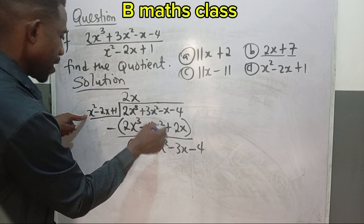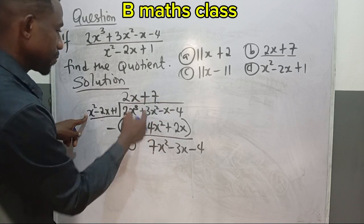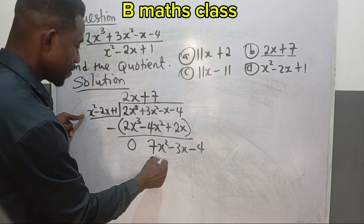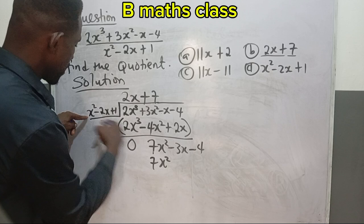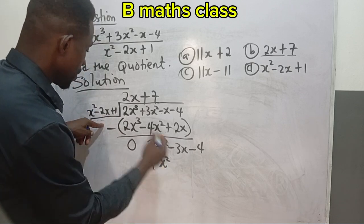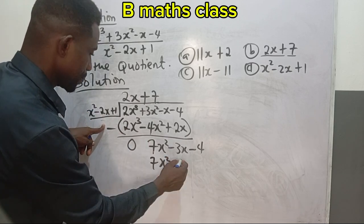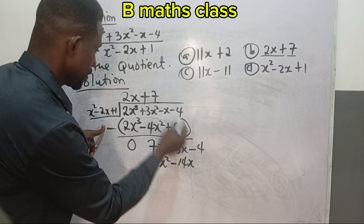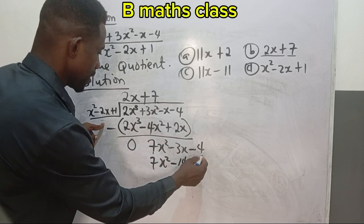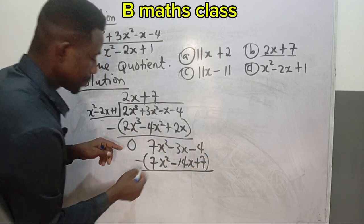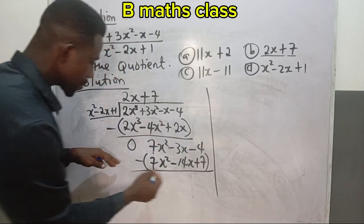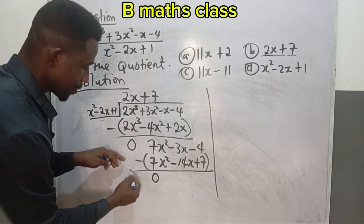The next is divide this 7x² by x², we have +7. 7 times x² is 7x², 7 times -2x we have -14x, 7 times 1 plus 7. We also have minus sign here, and as such, you see this gives us 0.